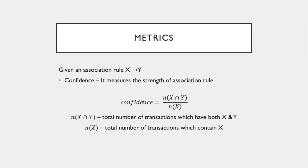The next metric is confidence, which is a measure of the strength of an association rule. Confidence is calculated as N(X ∩ Y) divided by N(X), where N(X ∩ Y) is the total number of transactions containing both X and Y, and N(X) is the total number of transactions containing only X. You can think of it in terms of conditional probabilities — it is somewhat similar.